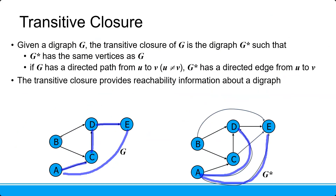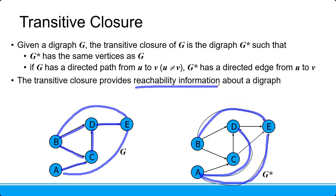There is a directed edge from B to D, D to E. Or we can also look at from B to C, C to D, D to E — then we can say there is a reachable path from B to E. This is the meaning of reachability information.